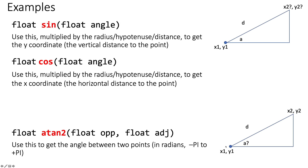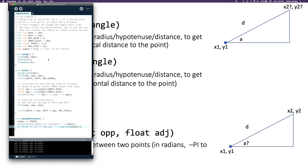So for the first example: we have a point x and y, we know the distance (the hypotenuse, or radius), and we know the angle, and what we're trying to find is the x and y coordinates of another point. This is a really common thing to solve and we're going to use sine and cos to do this. Let me pop over into Processing and show you what this looks like.